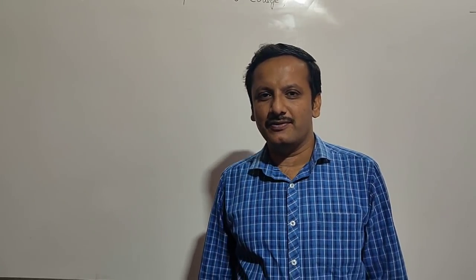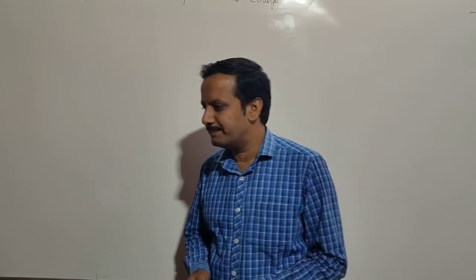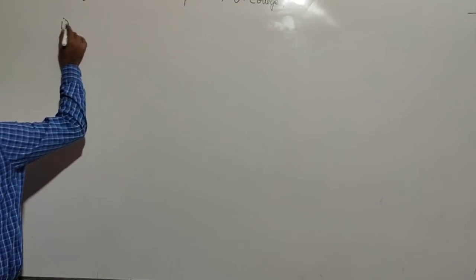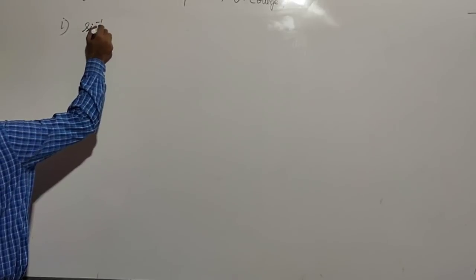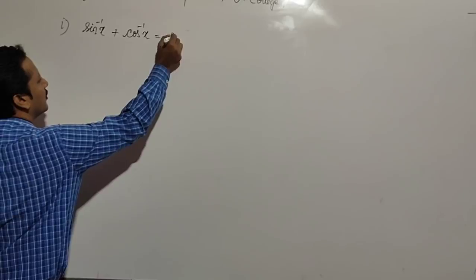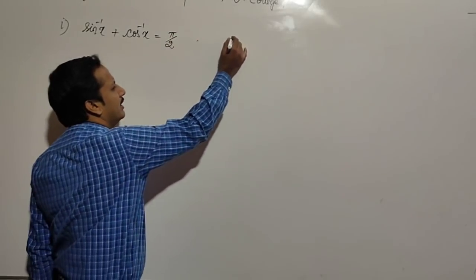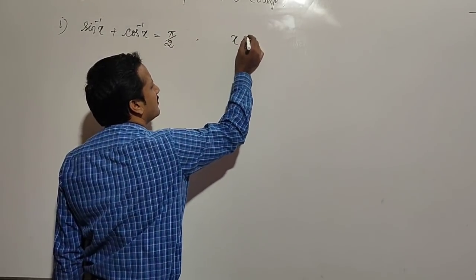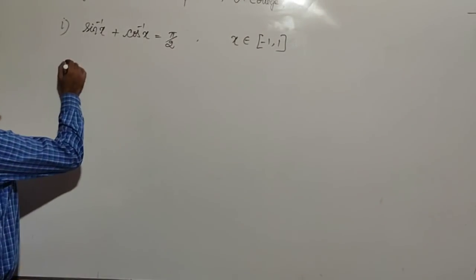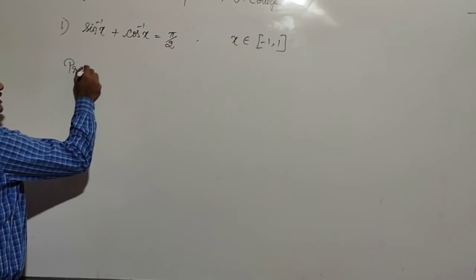Students, let us look at some more properties of inverse trigonometry functions. First, sin inverse x plus cos inverse x is equal to pi by 2, where x belongs to the closed interval minus 1 to 1. Let us now look at the proof of this result.